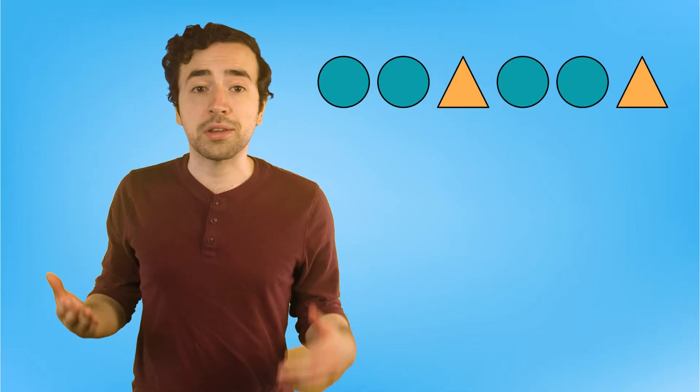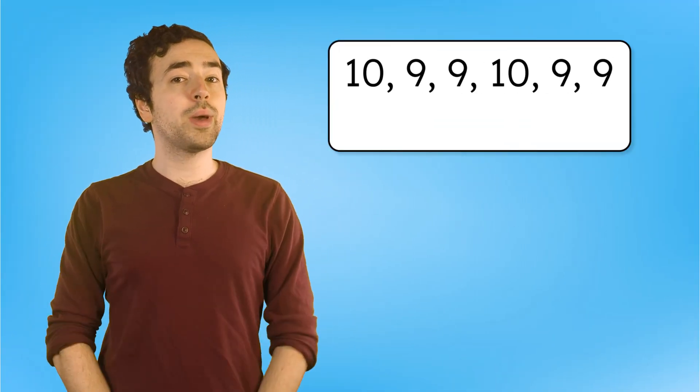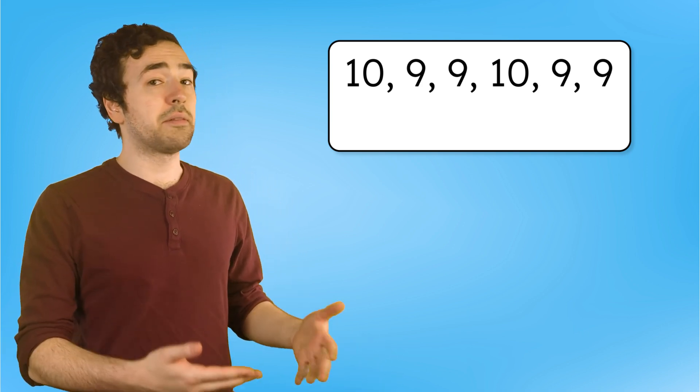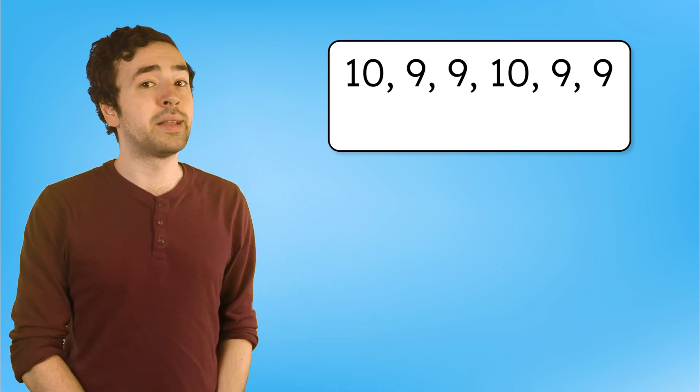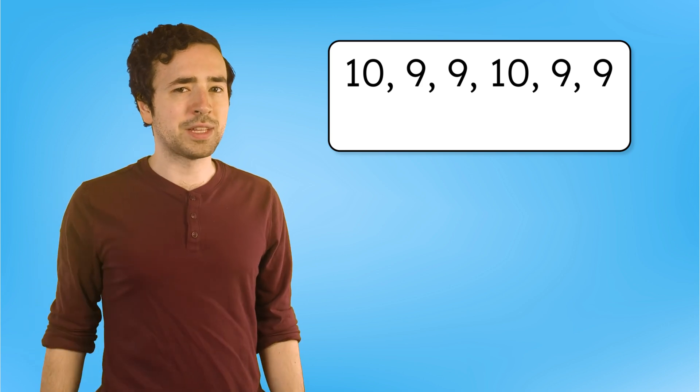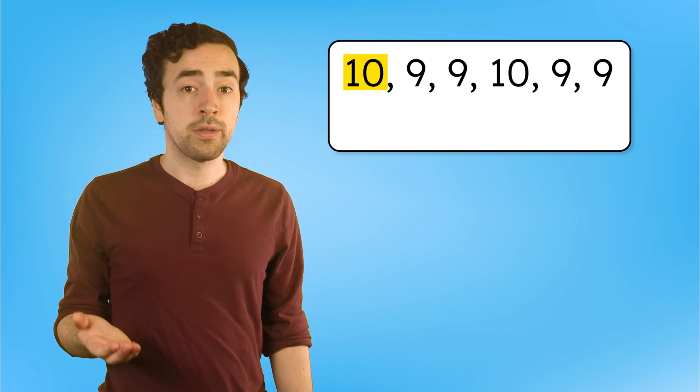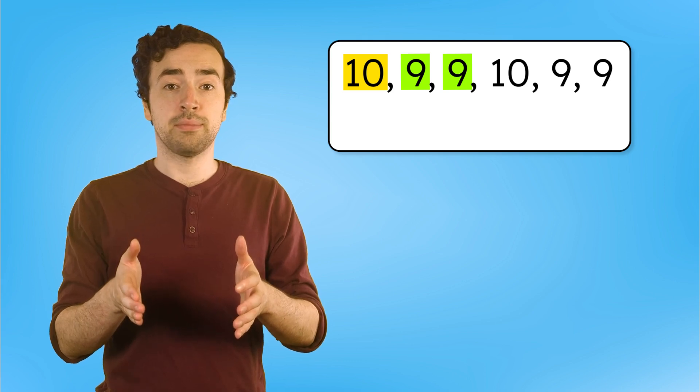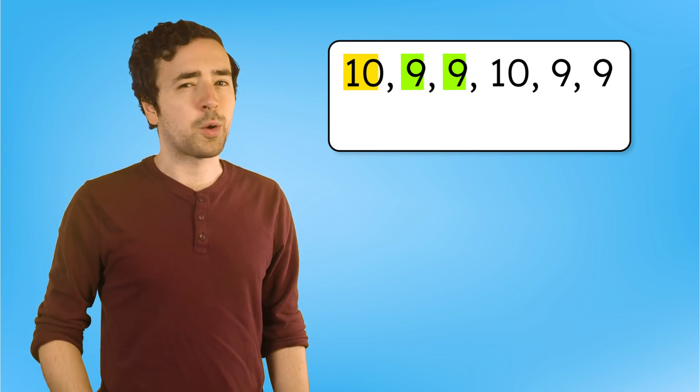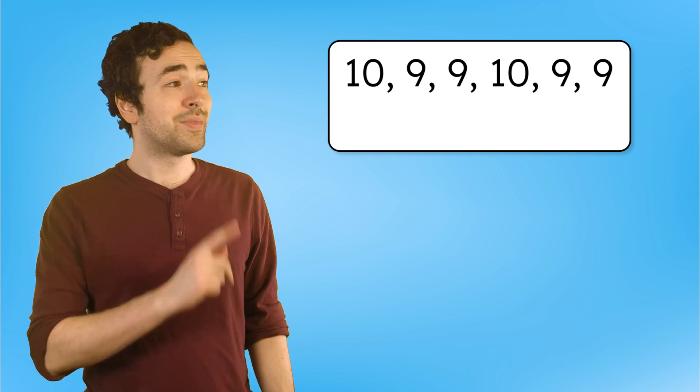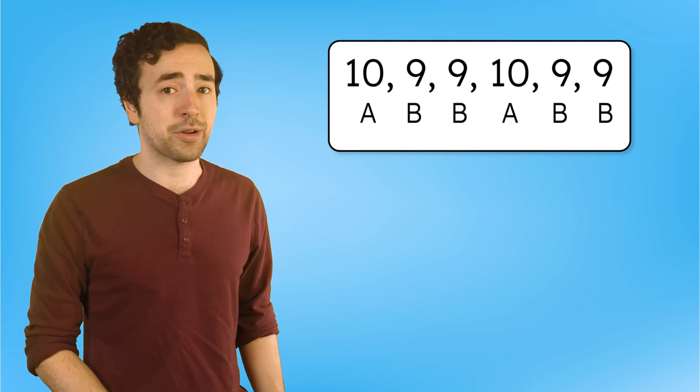But shapes aren't the only thing we can create a pattern with. We can also make patterns using numbers. Like this sequence: 10, 9, 9, 10, 9, 9. What do you notice about this pattern? We have one number, then two numbers that are the same, and then the pattern repeats. How can we describe this pattern with letters? This is an AAB repeating pattern.